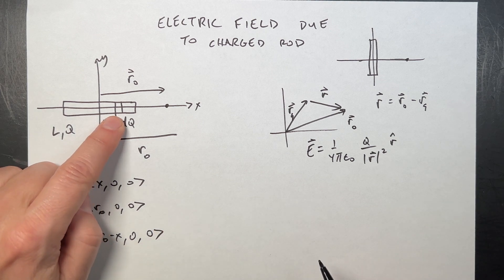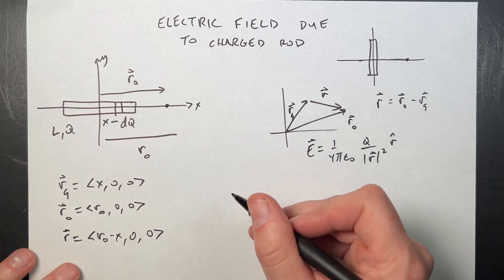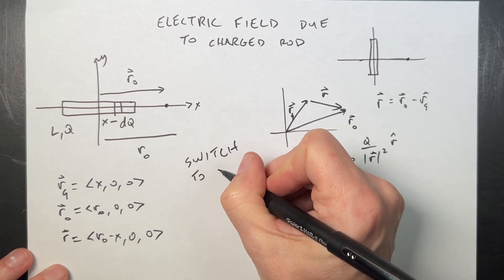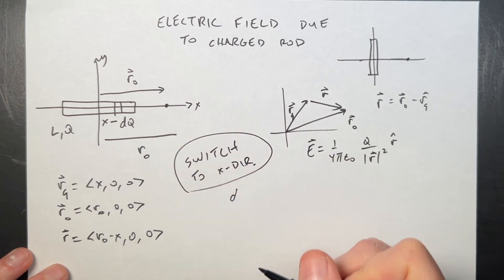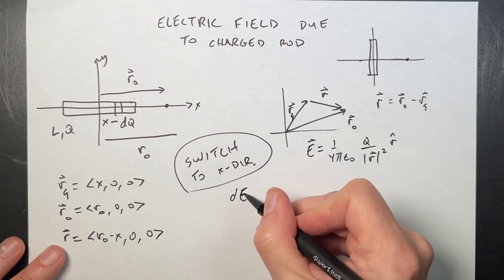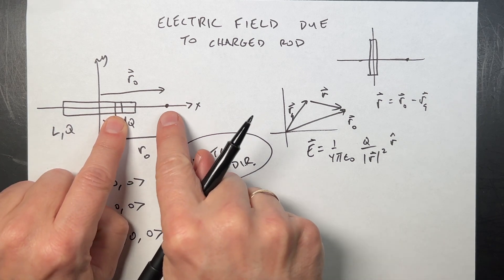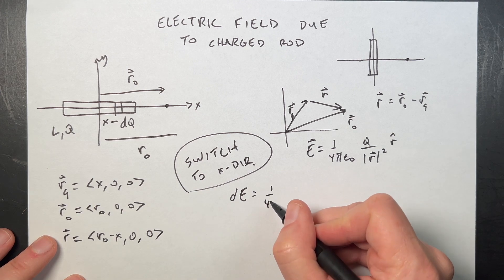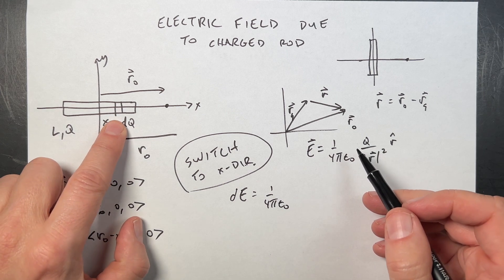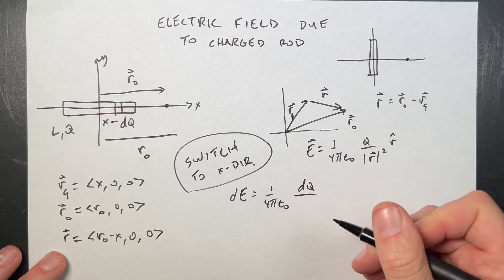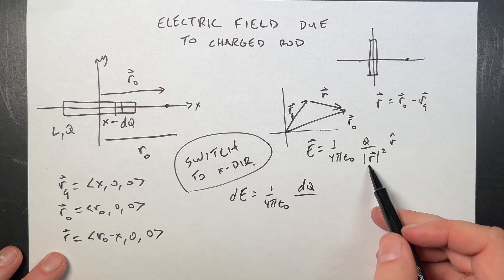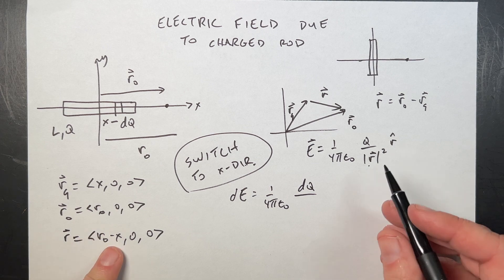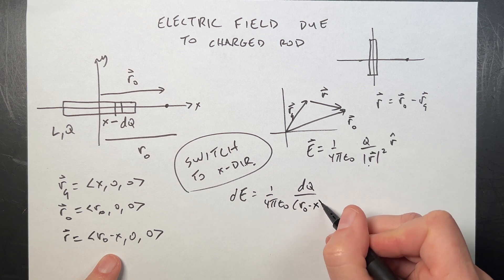Okay, so now I can write an expression for the electric field due to that single charge. I'm switching to x direction. So I don't have to worry about vectors anymore. So this is the x component. dE is the electric field at that point due to this piece. That's going to be equal to 1 over 4π epsilon 0, q. But in this case, the charge is dq.